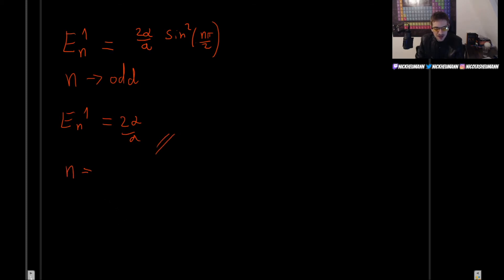Now, let's see what happens if n is even. For example, n equals 2. In that case, our energy levels will be 2 alpha over a, and sine of 2 pi over 2, which is simply pi. But sine of pi is, of course, 0. If it were 4, for example, we would get sine of 2 pi, which is also 0. So this will always be multiplied by 0, so it's just going to be 0.